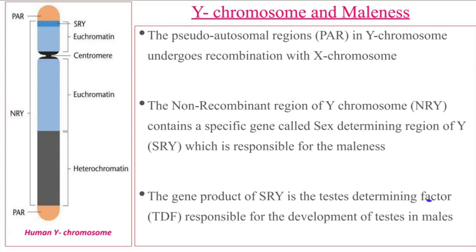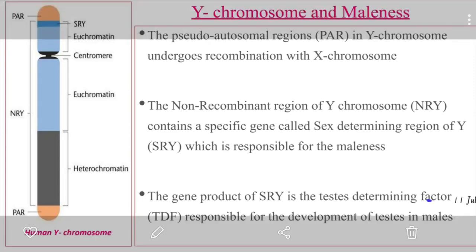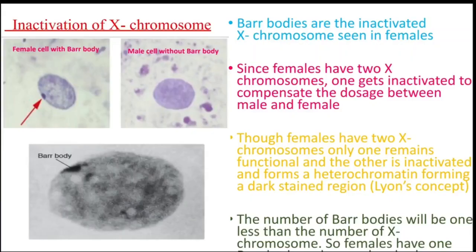Next we will discuss the Barr body. Scientists Barr and Bertram first observed a condensed body in the nerve cells of cats. This condensed body was present in females but not in males. They called it sex chromatin, which is later referred to as the Barr body. In the XX chromosome system, males have only one X and females have two X chromosomes.